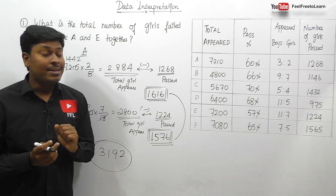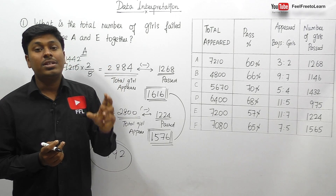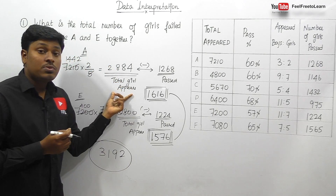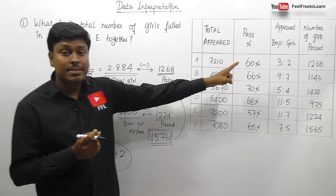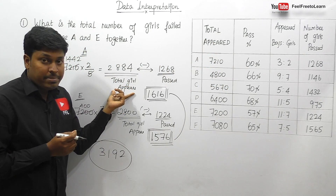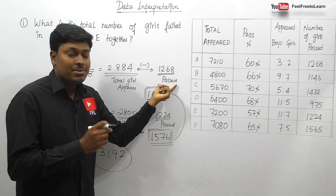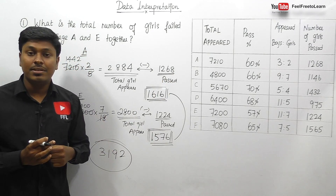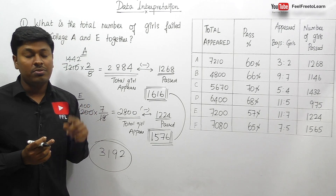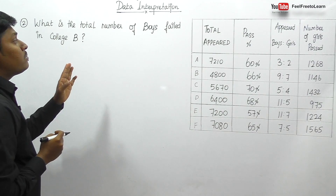I hope you can understand this concept clearly. First, from the total students I found how many girls appeared. Then, since the last column gives total girls passed, I subtracted girls passed from girls appeared to get girls failed. Finally the answer is 3192 for question number one.